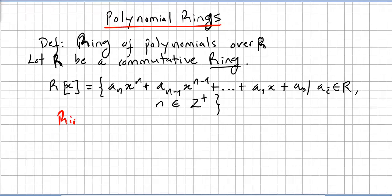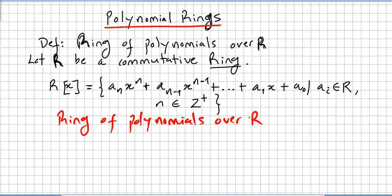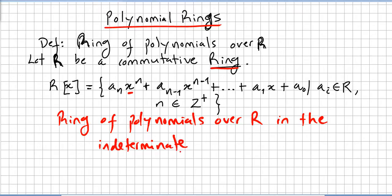This set is called the ring of polynomials over R, in the indeterminate x. In calculus or analysis you might call x the 'variable,' but in ring theory we call it the indeterminate.